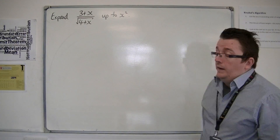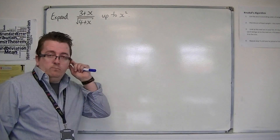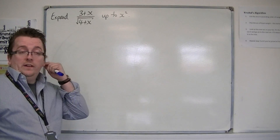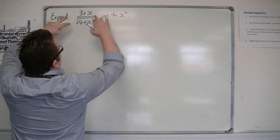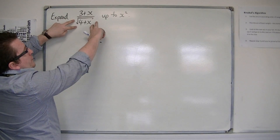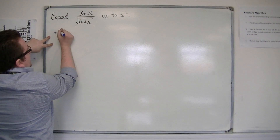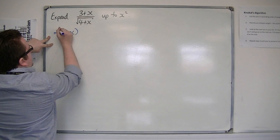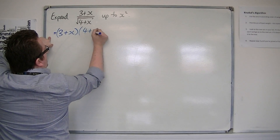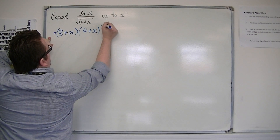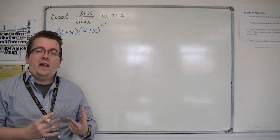First things first, we want to be able to rewrite this as a product. Now, (4 + x) square rooted is (4 + x) to the half. So this is the same as (3 + x) times (4 + x) to the minus a half.